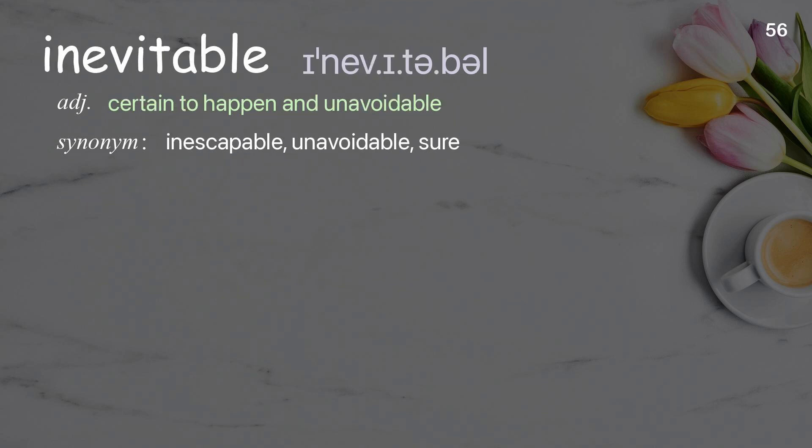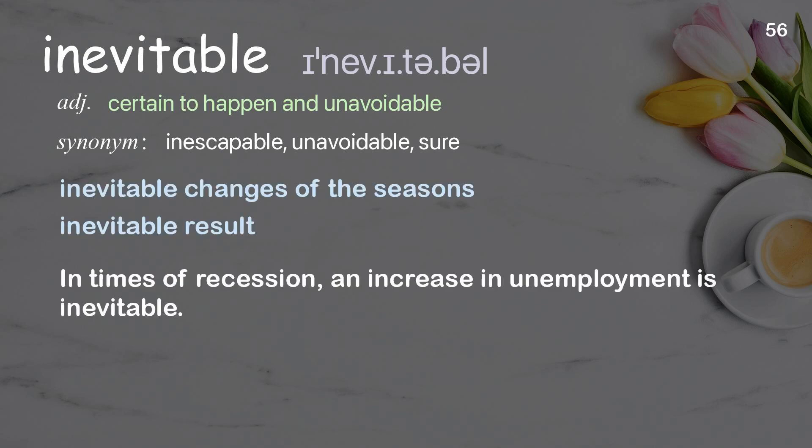Inevitable: Certain to happen and unavoidable. Examples: Inevitable changes of the seasons. Inevitable result. In times of recession, an increase in unemployment is inevitable.